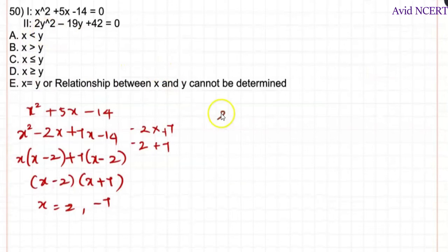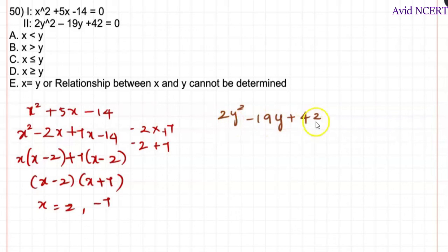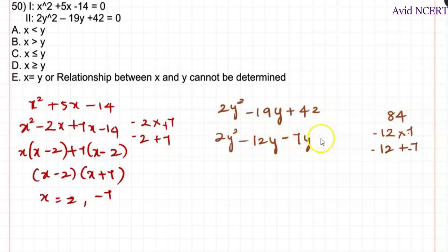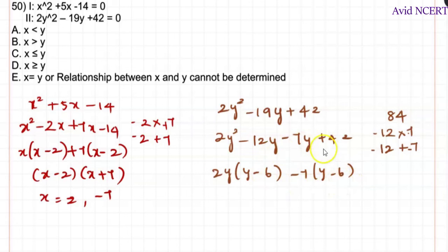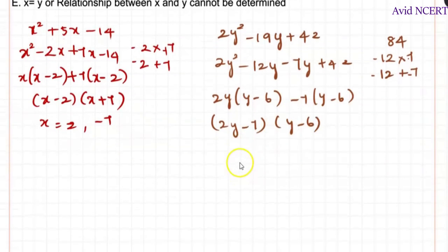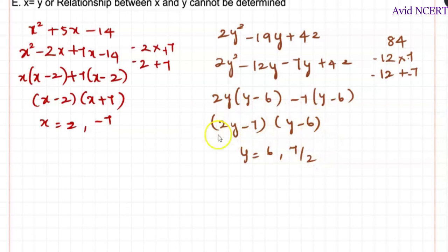For the second equation: 2y² − 19y + 42 = 0. Here, 2 × 42 = 84, and 12 × 7 = 84 with 12 + 7 = 19, so we use −12 and −7. Substituting: 2y² − 12y − 7y + 42, giving 2y(y − 6) − 7(y − 6). Taking (y − 6) as common: (2y − 7)(y − 6), so y = 6 and y = 7/2.